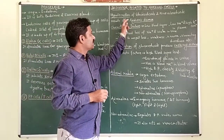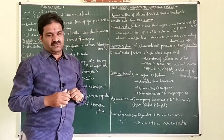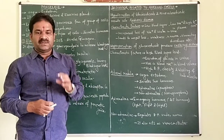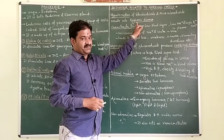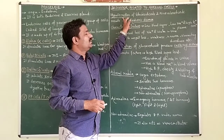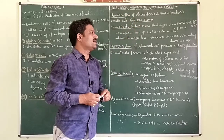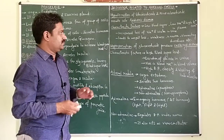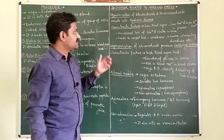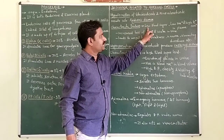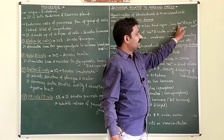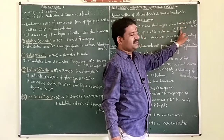Now, if there is hyposecretion or deficiency of glucocorticoids and mineralocorticoids, it results in a disease called Addison's disease. This disease is caused due to the deficiency of glucocorticoids and mineralocorticoids. The patient suffering from Addison's disease shows low blood sugar, low sodium, and high potassium concentration in the plasma.